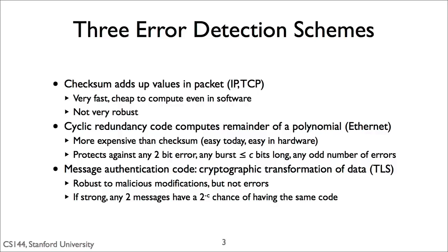Their major drawback is that they have pretty weak error detection guarantees. While they can catch a lot of random errors, it's easy to fool a checksum with as few as 2-bit errors, if the 2-bit errors cancel each other out. For example, if one bit error adds 32 and another bit error subtracts 32, the checksum won't catch the error. So a checksum can catch a lot of errors, but it has very weak guarantees on what errors it will catch.